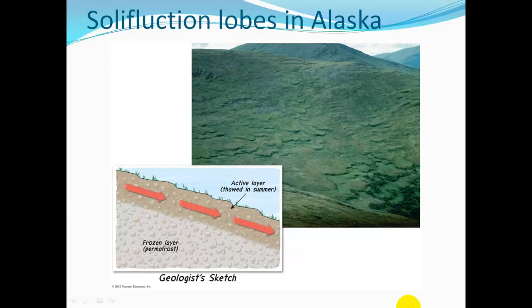Solifluction lobes in Alaska: there's permafrost, the surface starts to thaw, becomes full of moisture, and starts flowing over the frozen layer underneath.